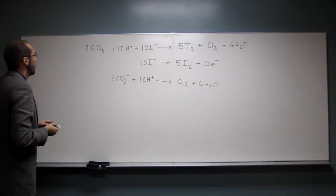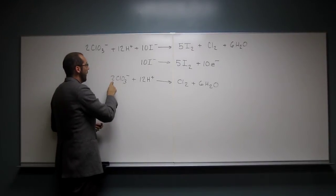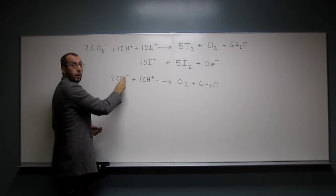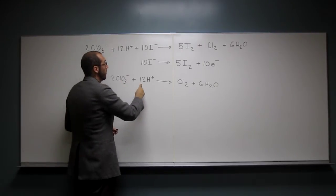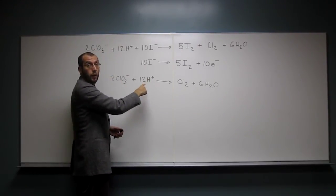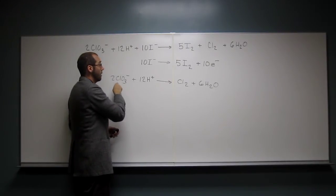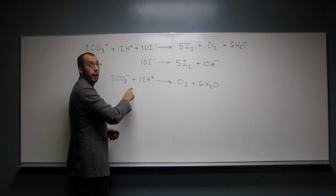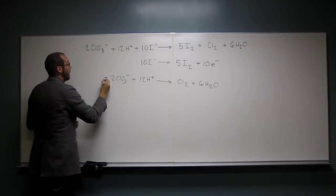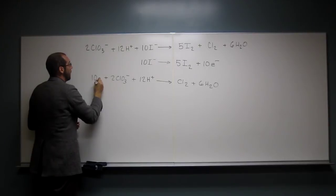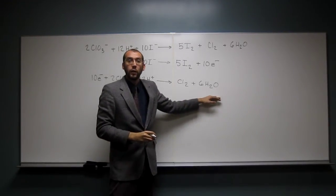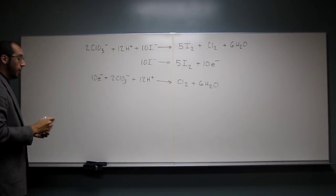So now if we look at our charge balance here, we've got a minus 2, so 2 times negative 1, that's going to be overall minus 2. And then 12 times positive 1, so that's going to be overall plus 12. So minus 2 plus 12 is going to be plus 10. So we're going to have to add 10 electrons to balance the charges up, because this side is 0 over here. Does that make sense?